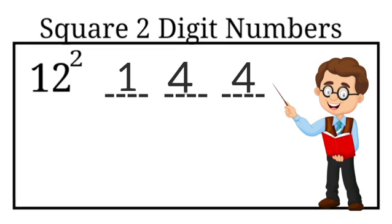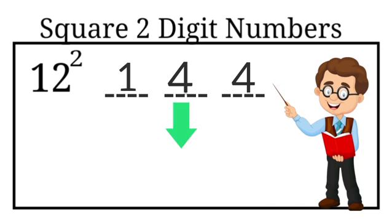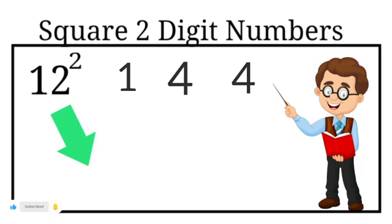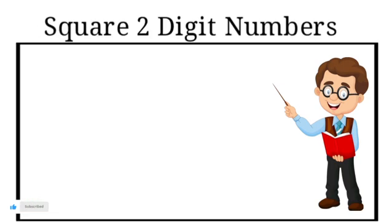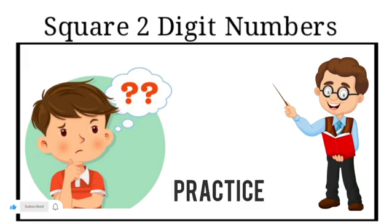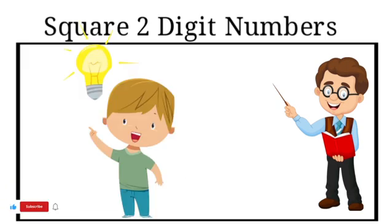Now it's very simple — we just write the three parts together and we get our answer. The square of 12 equals 144. Although at first this trick might be a bit confusing, after some practice it will be easy for you to square two-digit numbers.